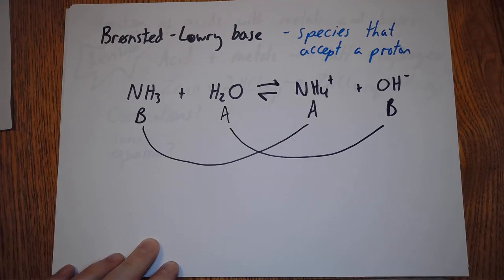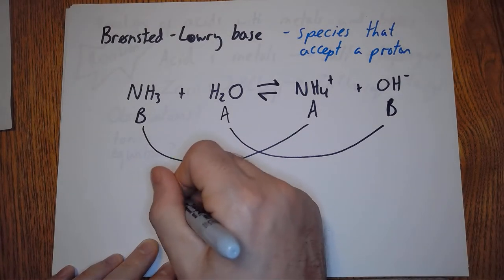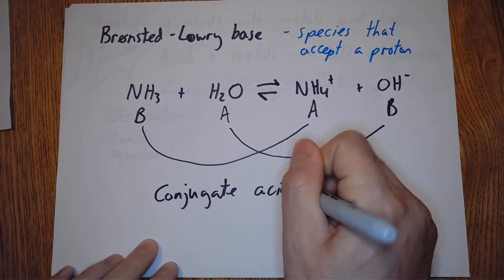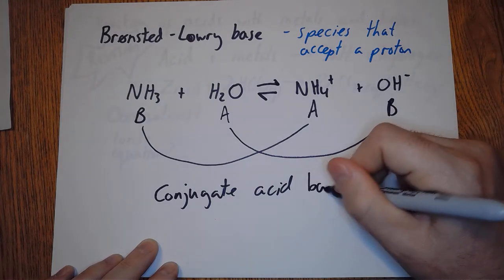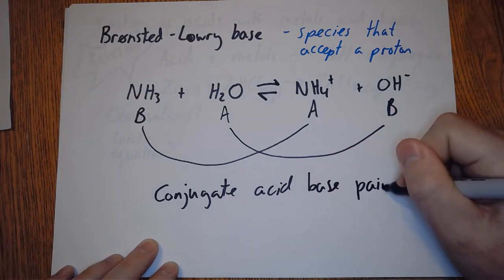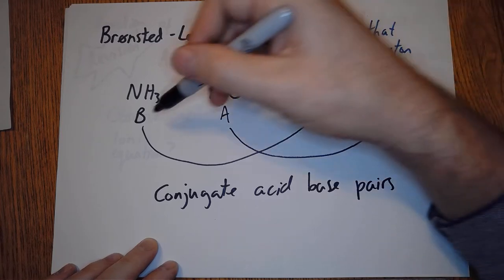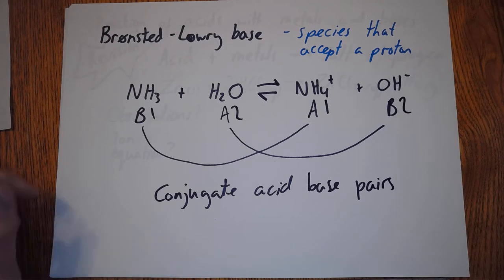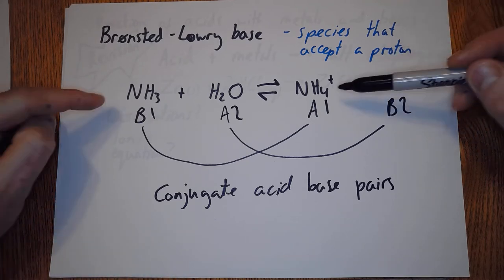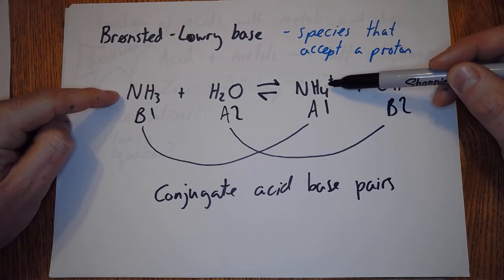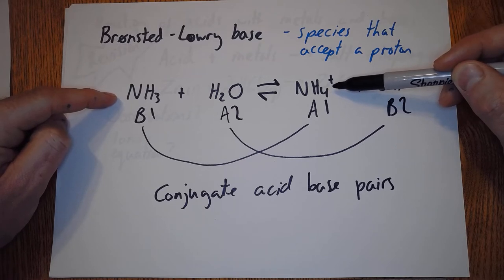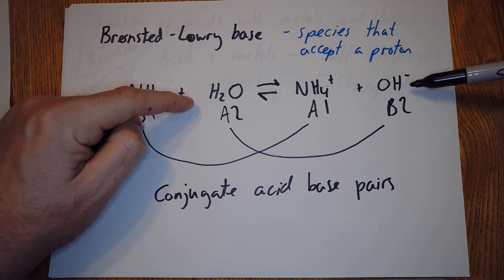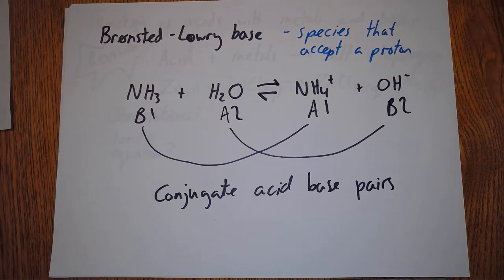They're called conjugate acid-base pairs. If you look at the pairs, what connects them is they differ by an H+. The difference between NH3 and NH4+ is an H+. The difference between H2O and OH- is an H+. They're conjugate acid-base pairs.